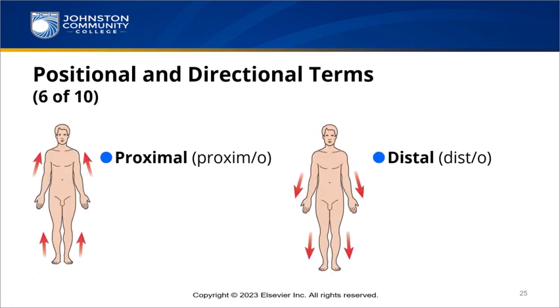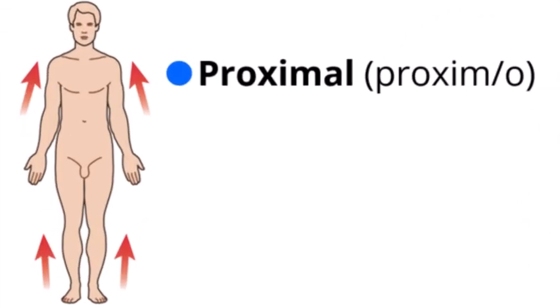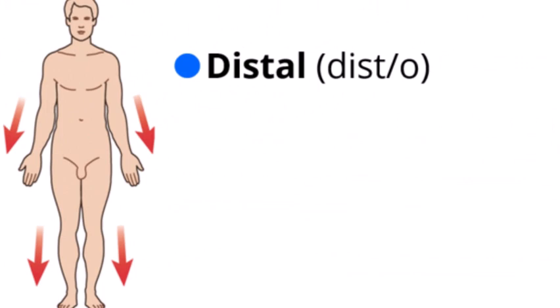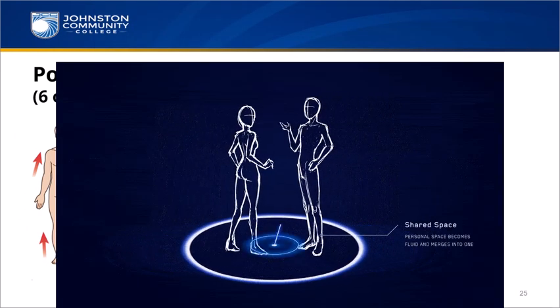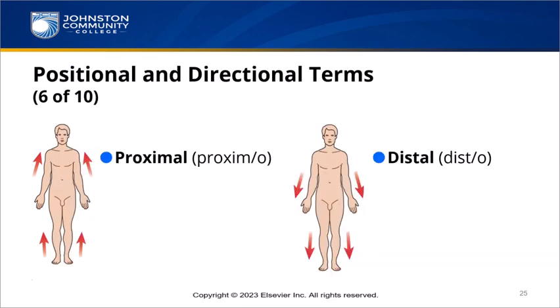Proximal means pertaining to near the point of origin — proximo is combining form for near. Distal means pertaining to farther away from the point of origin — disto is a combining form for far. Think: distal has distance, proximal means you're in proximate space to something. A frame of reference is important — the definition includes the point of origin. If the terms describe a location nearer to or farther from the point of origin of the arms and legs, they are referring to the shoulders and hips respectively. An example: the wrist is distal to the elbow, or the knee is proximal to the ankle.